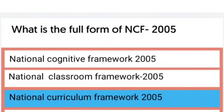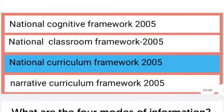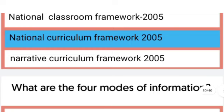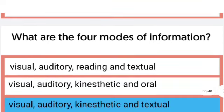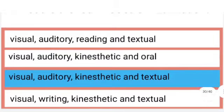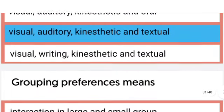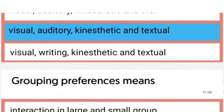What is the full form of NCF 2005? The full form of NCF 2005 is National Curriculum Framework 2005. What are the four modes of information? The four modes of information are visual, auditory, kinesthetic, and textual.